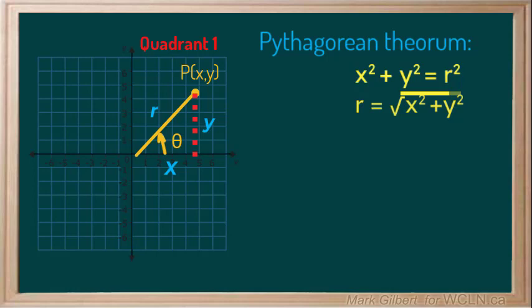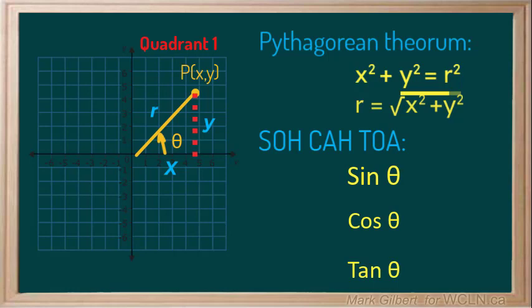Now recall all three trig ratios or use SOHCAHTOA to help you remember. We can use these ratios to define sine, cosine, and tangent of theta in terms of x, y, and R.